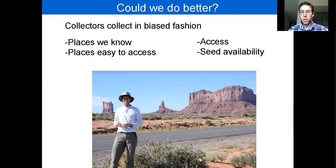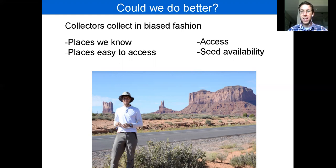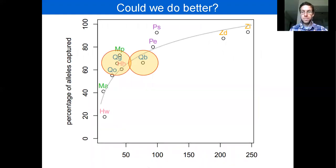We can also work on better practices for when we're in the field collecting seeds. Seed collectors often go to places that are easy to access logistically and without permitting or legal issues, places where we know there's been seed in the past, familiar places, and places that are botanically interesting and beautiful. The consequence is that some species are conserved better than others. We see two examples where both capture about the same amount of genetic diversity, but one with many more samples than the other.